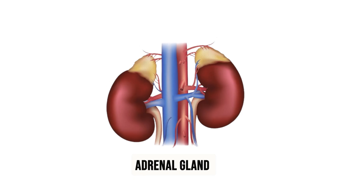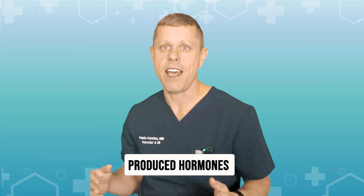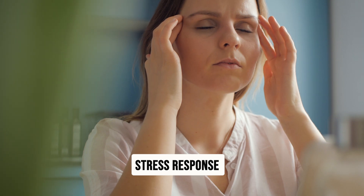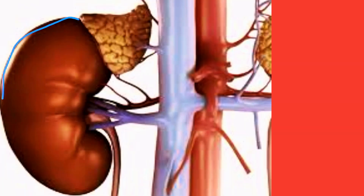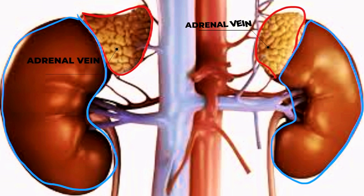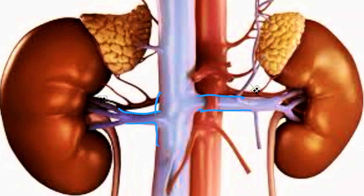The adrenal glands are tiny glands located just above your kidneys and they produce hormones that help control blood pressure, stress response, and other essential functions. Here is a picture of your kidneys — the adrenal veins are located just above the kidney. There are arteries going to the adrenal glands, this is the left renal vein and the right renal vein.